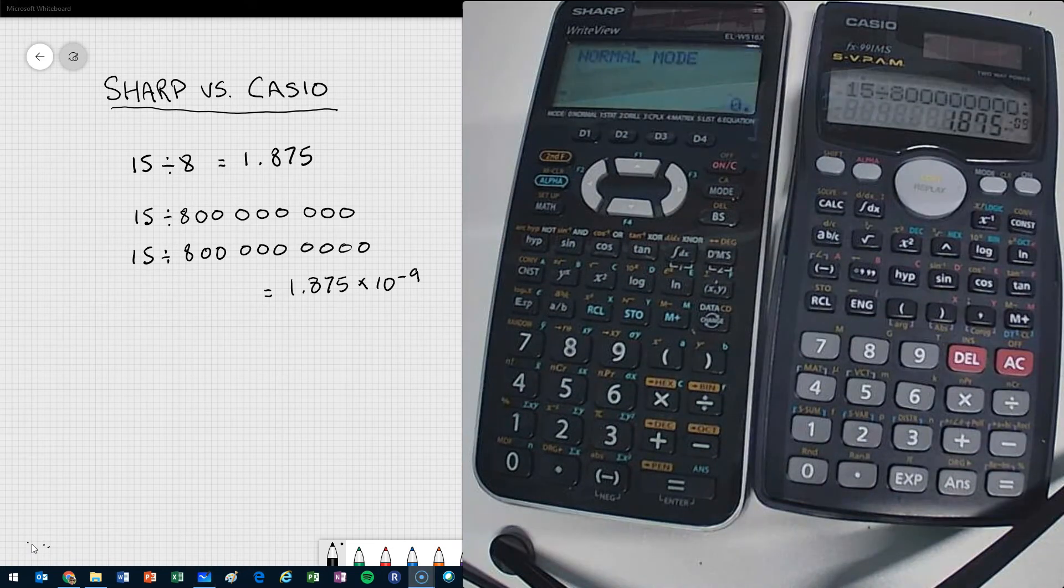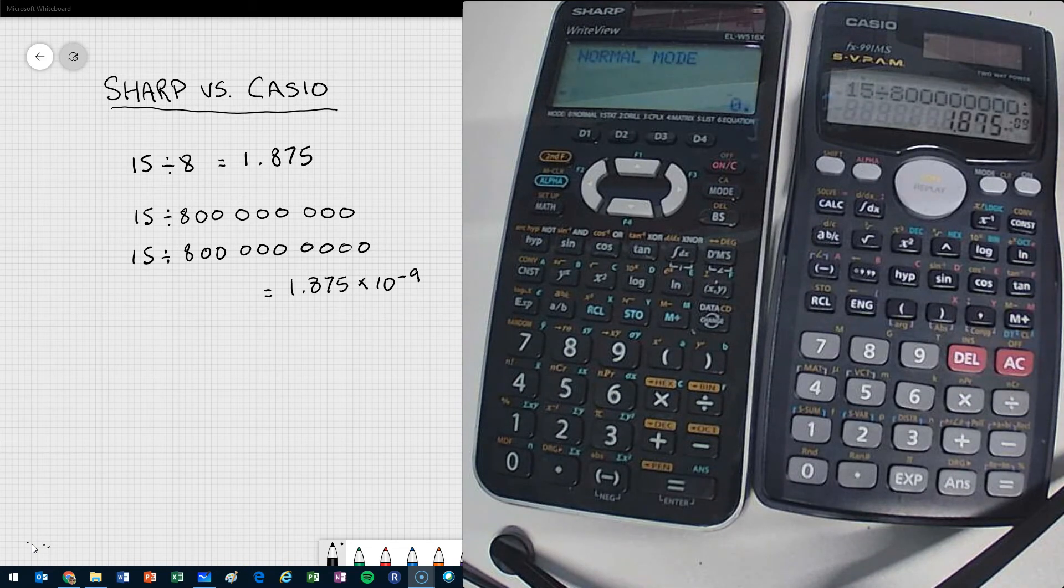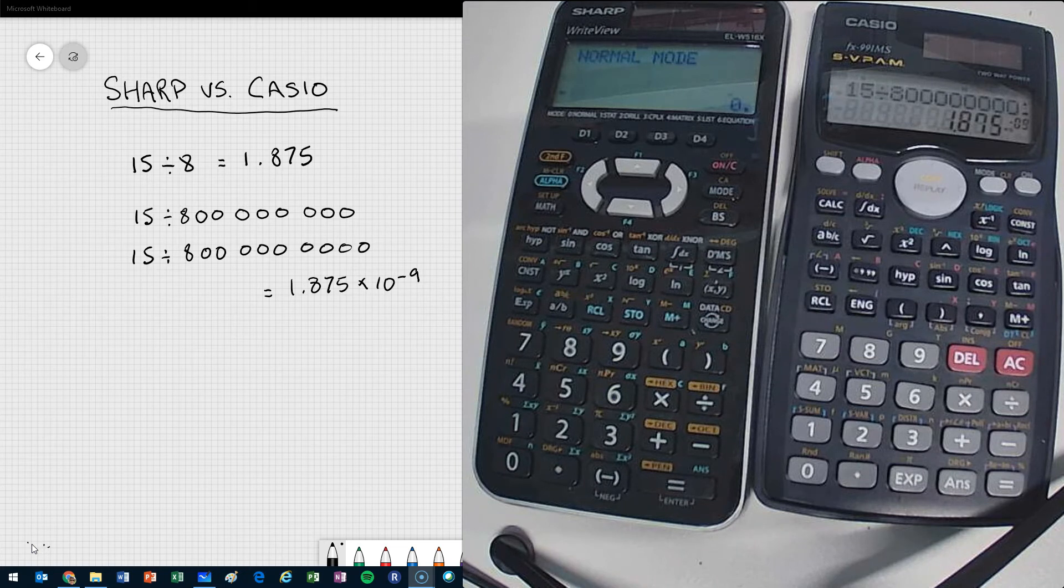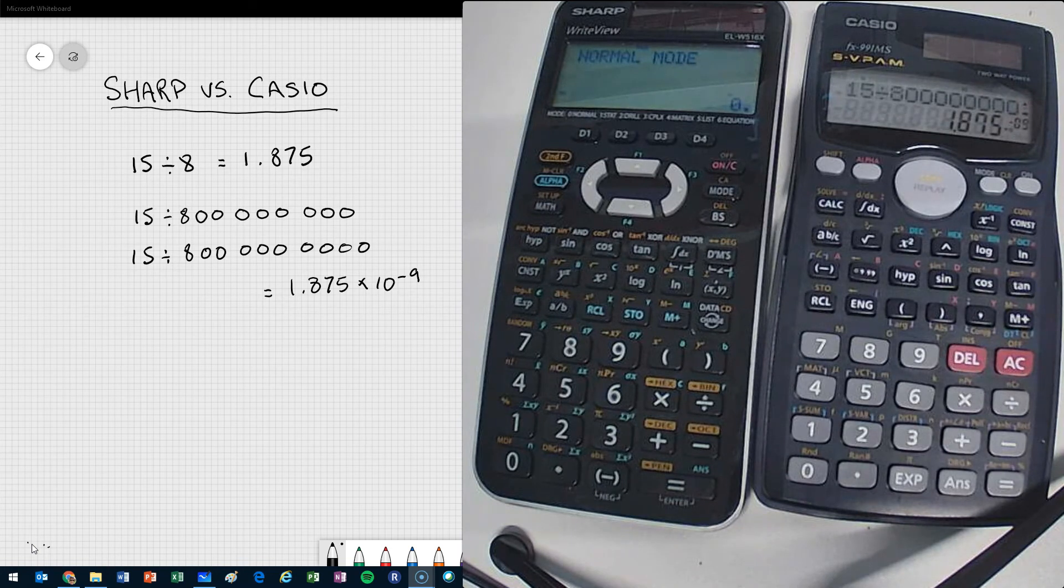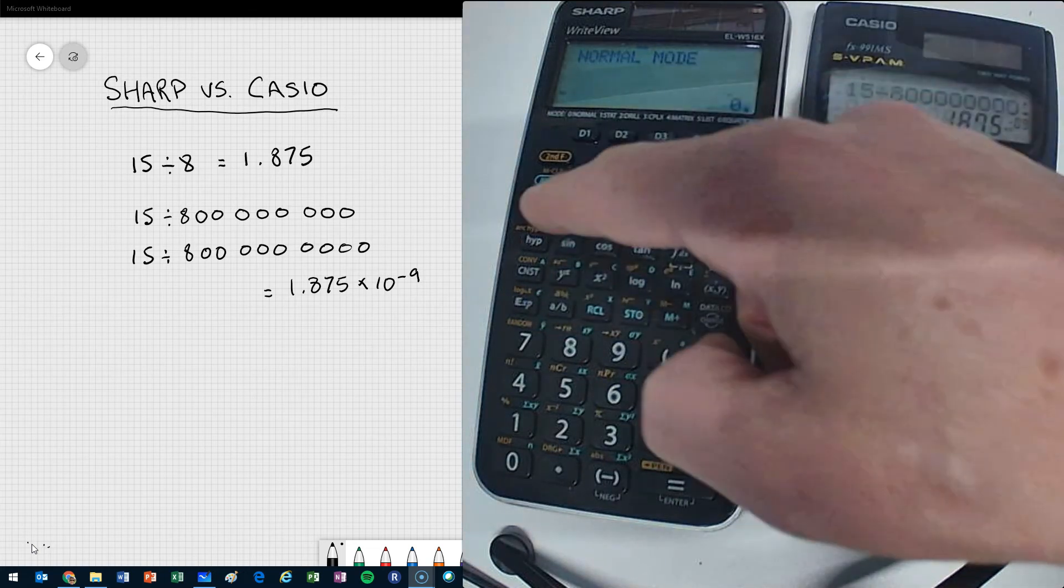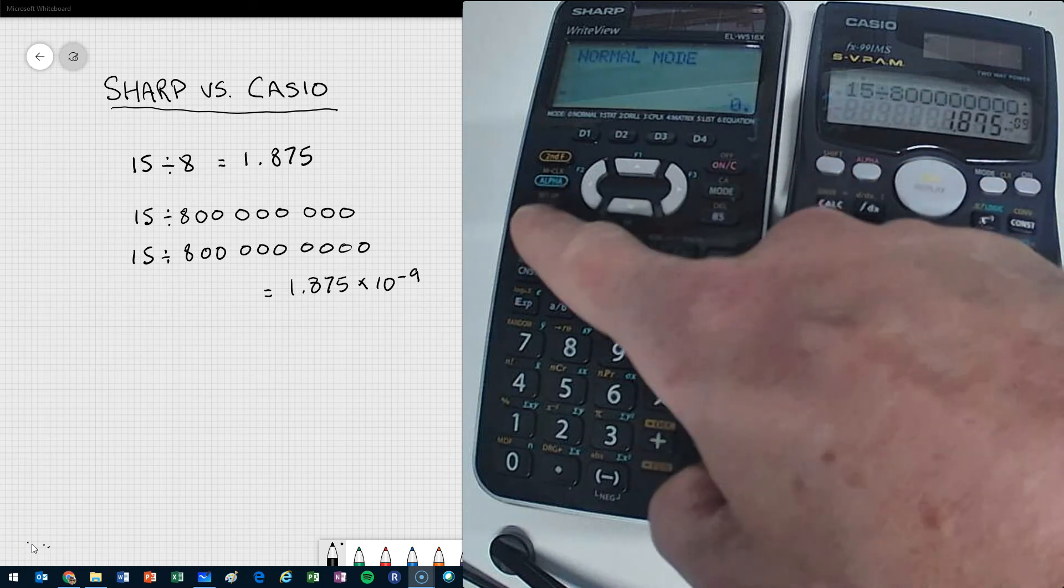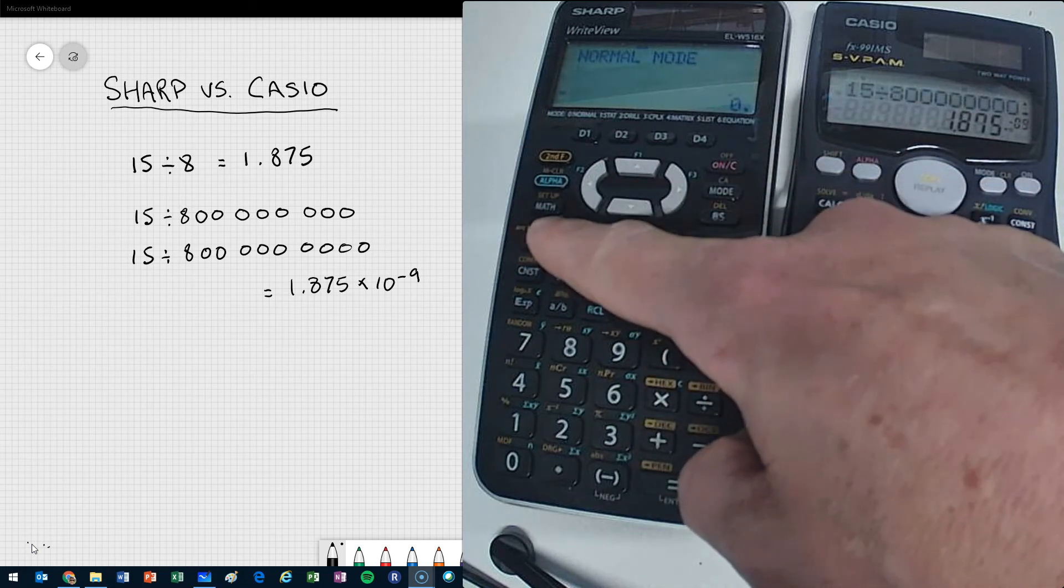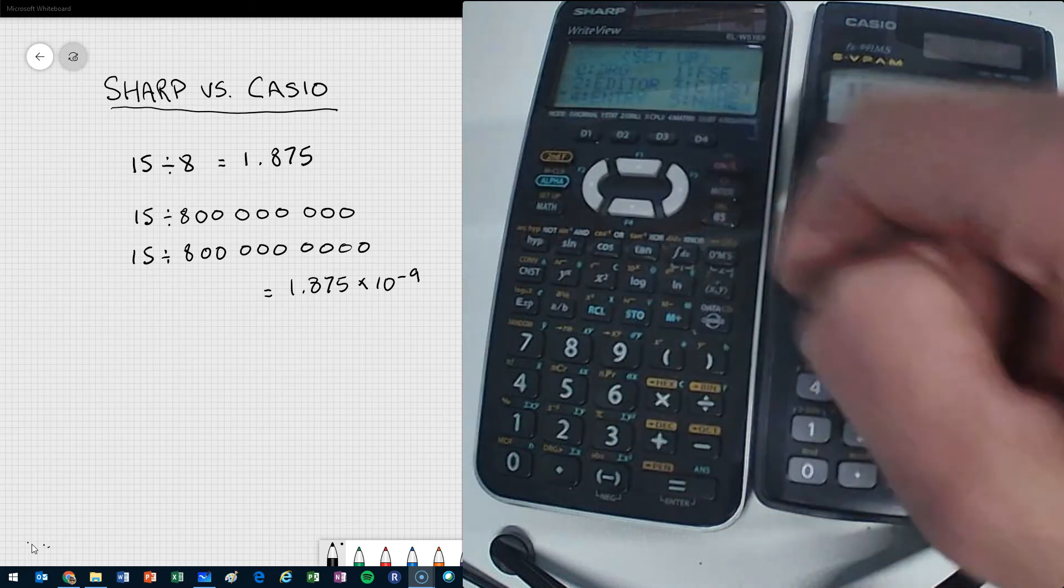One thing that you can try as well in your SHARP calculator is to change the mode. So by default, this is in a mode known as normal 1. And there's a couple different variations of SHARP calculators, but you can change the mode so that it goes into scientific notation a little bit earlier. So how you get to that mode, I guess, on this calculator is using the setup button, second function, I guess, of the here.